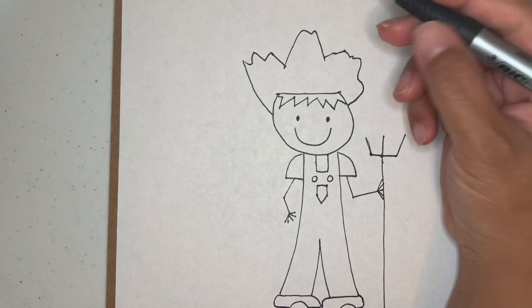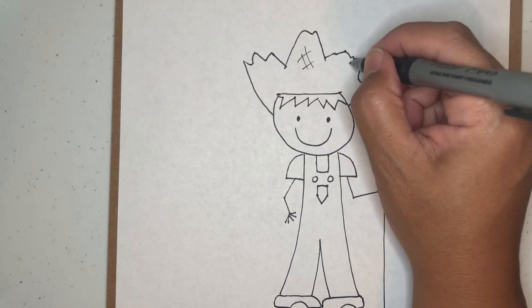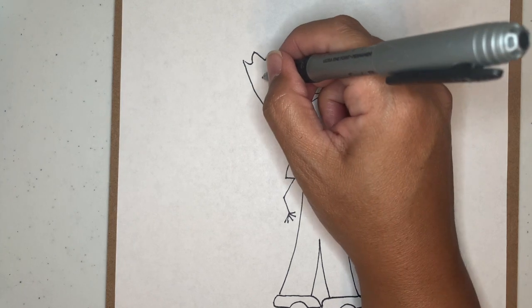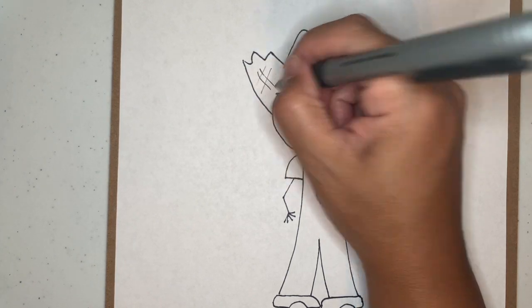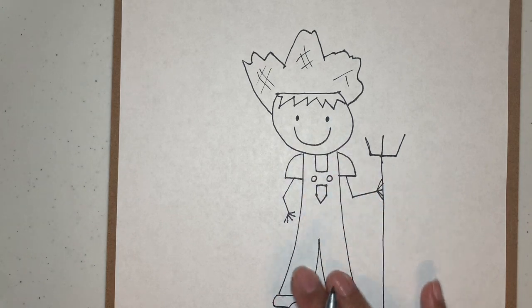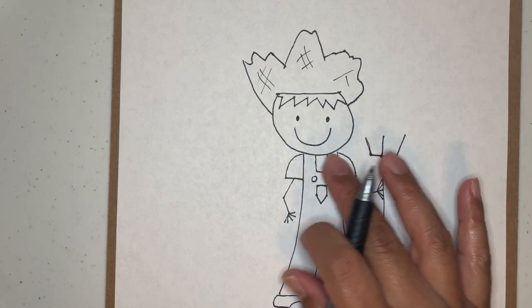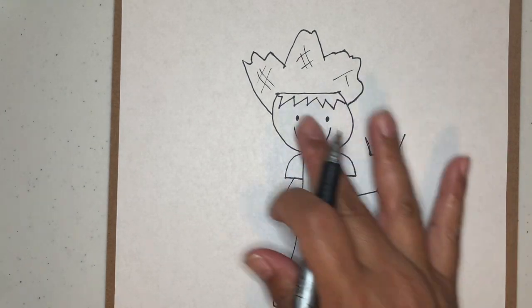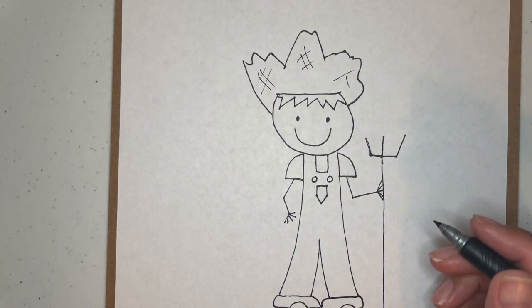And then, because this is a straw hat, we're going to make little hash marks. Just little hash marks like that. So, it looks like a straw hat. And don't forget to color. So, of course, you want to color the overalls blue. You can leave your shirt white, or you can make it red. You could use skin color for your hair.